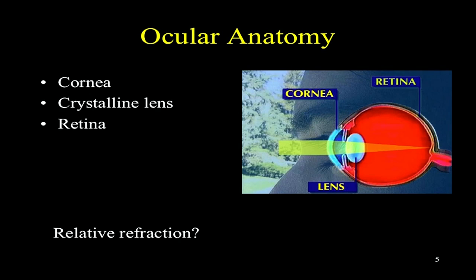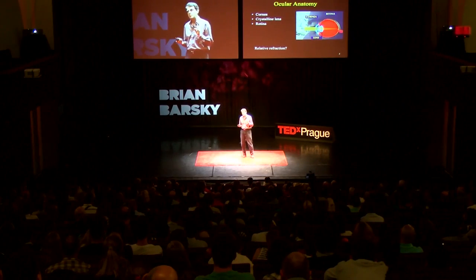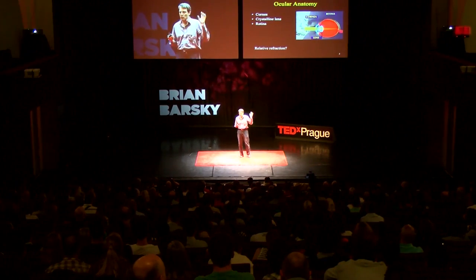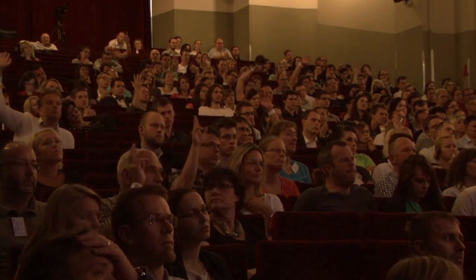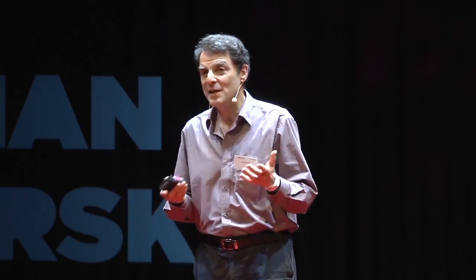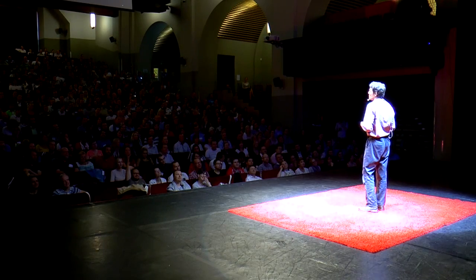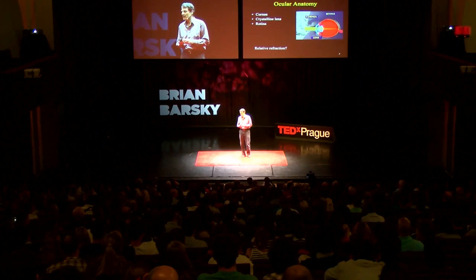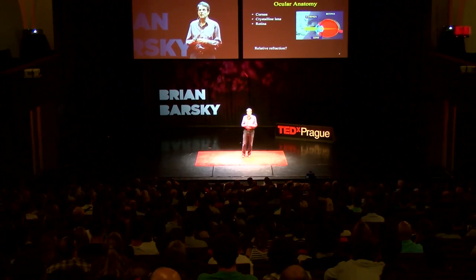Inside the eye there are three elements we'll talk about today: the cornea at the very front, then the crystalline lens, and the retina in the back. I'd like to ask: which one, the cornea or the crystalline lens, does most of the bending of light? The audience voted for the lens — which is why maybe we should not do science by democracy. You will learn that it's actually the cornea doing about twice as much bending of light as the lens. The lens just has a better marketing department and a better name.